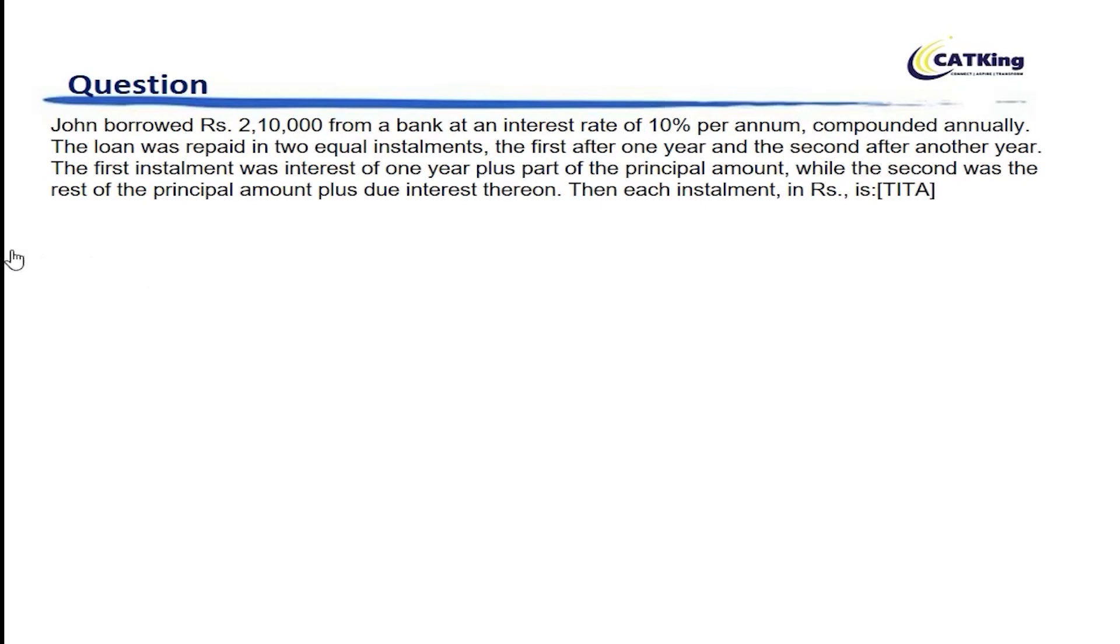Now, John borrowed 2,10,000 from a bank at an interest rate of 10% per annum. Compounded annually. So it's a compound interest problem.